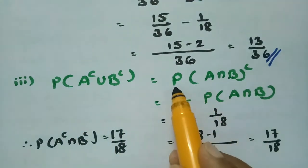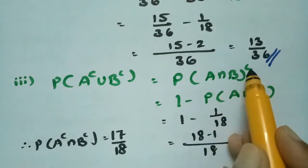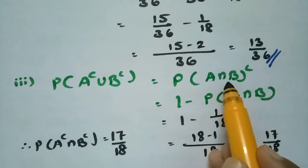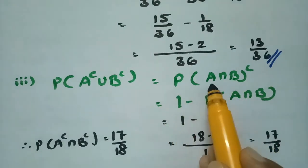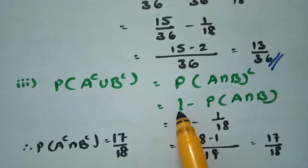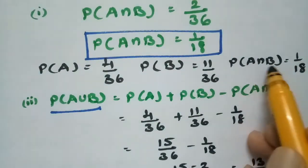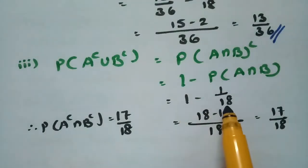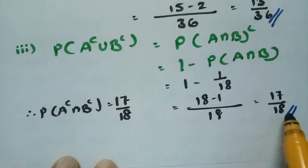Next, probability of A complement union B complement. By De Morgan's law, this equals probability of (A intersection B) complement, which equals 1 minus probability of A intersection B. Since P(A∩B) = 1/18, we get 1 − 1/18 = 17/18.